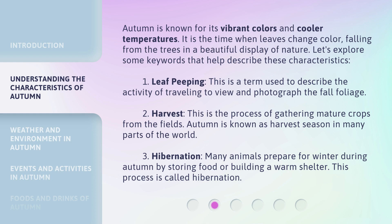Autumn is known for its vibrant colors and cooler temperatures. It is the time when leaves change color, falling from the trees in a beautiful display of nature. Let's explore some keywords that help describe these characteristics.